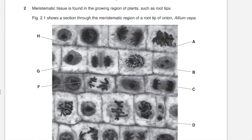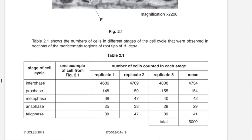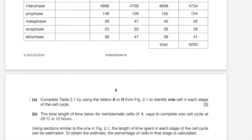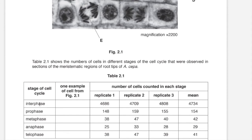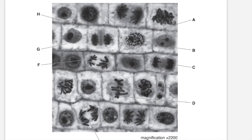Question 2: meristematic tissue is found in the growing regions of plants such as root tips. Figure 2.1 shows a section through the meristematic region of a root tip of onion. Table 2.1 shows the number of cells in different stages of cell cycles observed in sections of meristematic regions. You have G1, S phase, and G2 phase, all in interphase, and then the rest of the stages of the mitotic cell cycle. Complete table 2.1 using letters A to H from figure 2.1. Starting with interphase: in this phase the chromosomes have not condensed, so you'd not be able to see visible chromosomes — it would just be a nucleus — and that could be cells B and G.